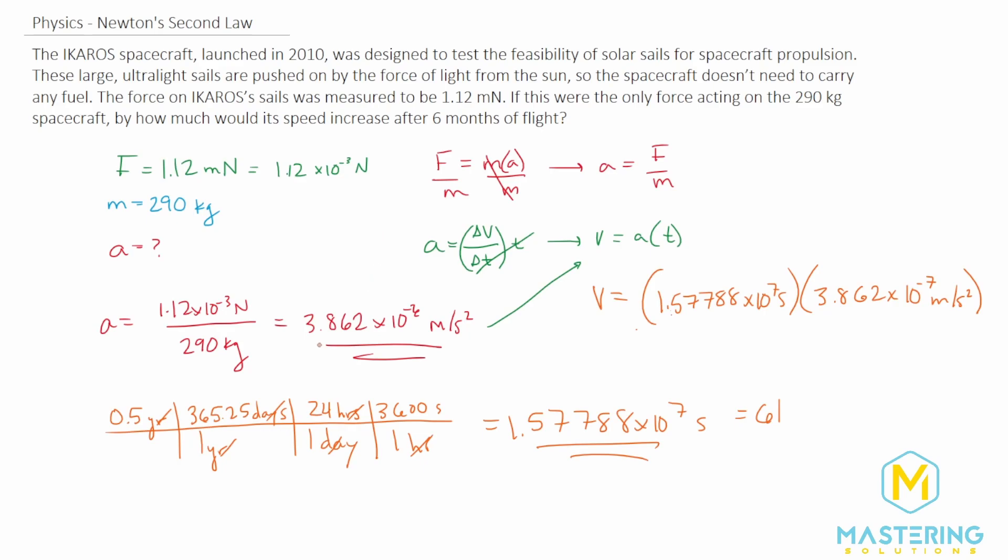And we're looking for the speed. So this is the velocity, and the units will be meters per second. So that is the final speed for the spacecraft after six months of flight, with this force as the only thing acting on the spacecraft.